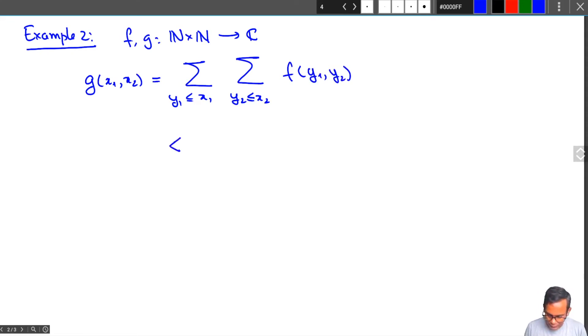Then how do we recover f from g? It turns out that this is equivalent to the formula f(x₁, x₂) = g(x₁, x₂) - g(x₁-1, x₂) - g(x₁, x₂-1) + g(x₁-1, x₂-1). It's similar to the previous formula but there's a slight twist in it.